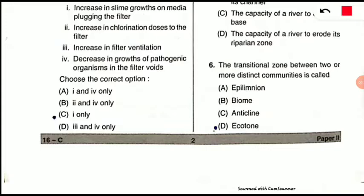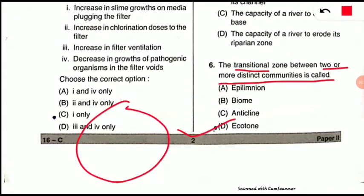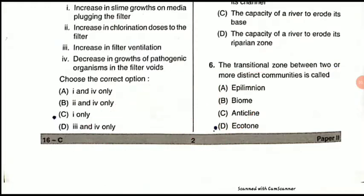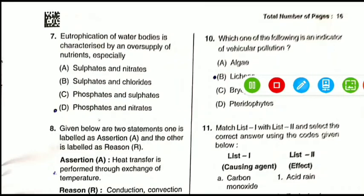Question 6: The transitional zone between two or more distinct communities is called what? It is called the ecotone region. For example, between a saltwater biome and a land area, mangroves grow — mangroves are an ecotone ecosystem between the saltwater and land regions. This transitional zone between two or more distinct communities is the ecotone zone.